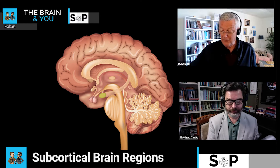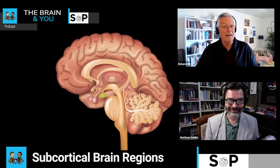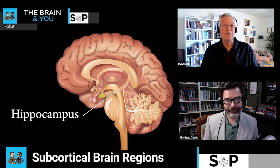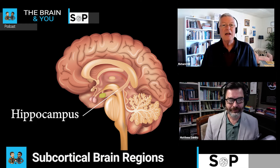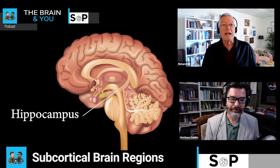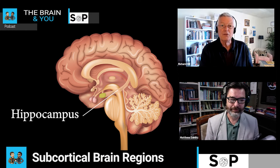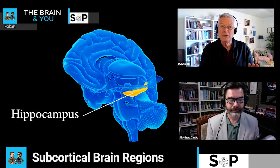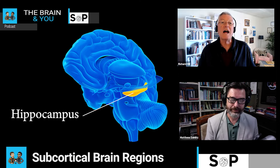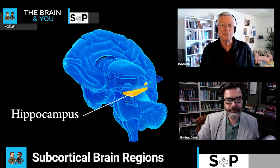Now we move on to another structure involved in a lot of things — let's start with its regulatory impact on the HPA axis. We're talking about the hippocampus. The hippocampus has a series of glucocorticoid receptors that receive and are able to detect that the body has plenty of cortisol running around the system. It then messages the hypothalamus saying it's okay — cortisol's up, we're getting adrenaline, we're running, you can calm down now. These regulatory processes are an example of how interconnected all these seemingly discrete elements of the brain are.